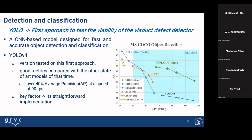As you already know, YOLO is a CNN-based model designed for fast and accurate object detection and classification. We used the COCO dataset — a very good dataset with different objects for detection to test different algorithms. You can see here how we used YOLOv4 and how it works. It is a version tested with good metrics compared with other state-of-the-art models: 14% better average precision at 90 frames per second. A key factor is its straightforward implementation.